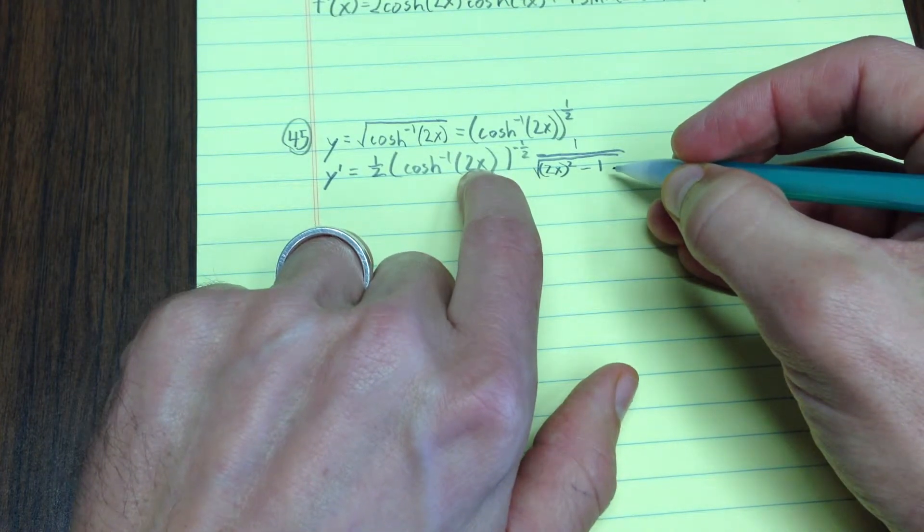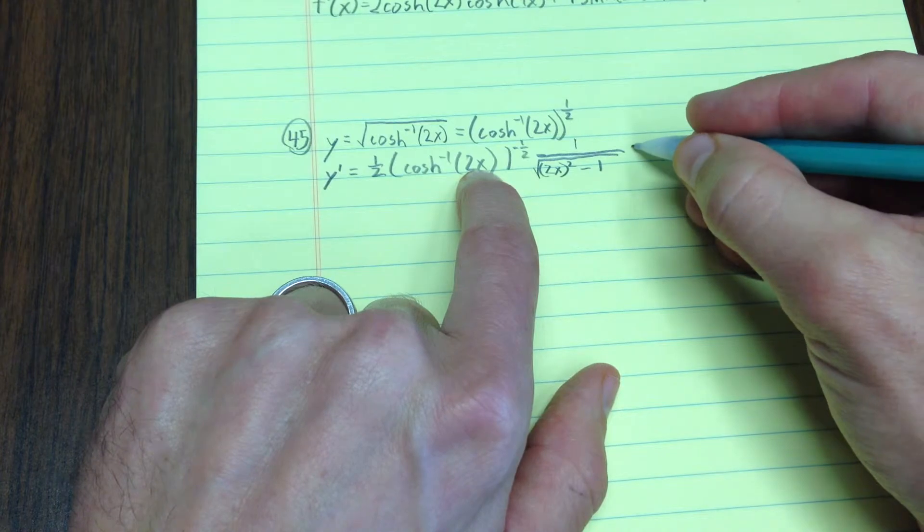1 over the square root of our u here being 2x, so 2x squared minus 1. Now, we've got to use the chain rule one more time, times the derivative of u, which is just 2.